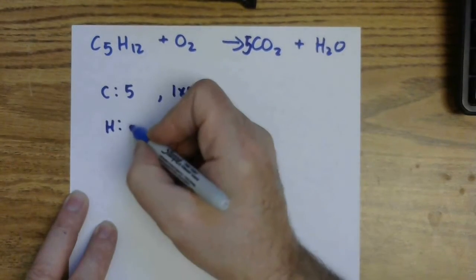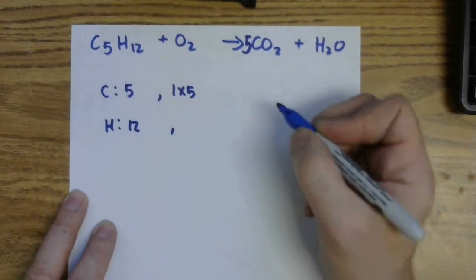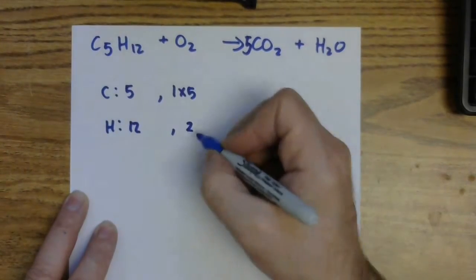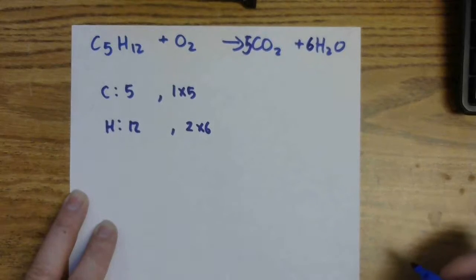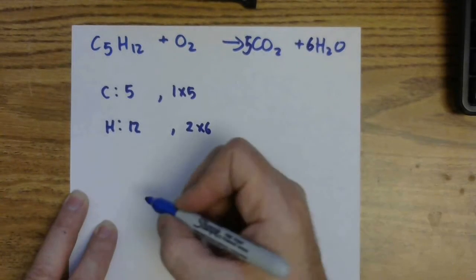On the left, I have 12 hydrogens. On the right, I have two. So I'm going to put a coefficient of six in order to bring my hydrogens into balance.